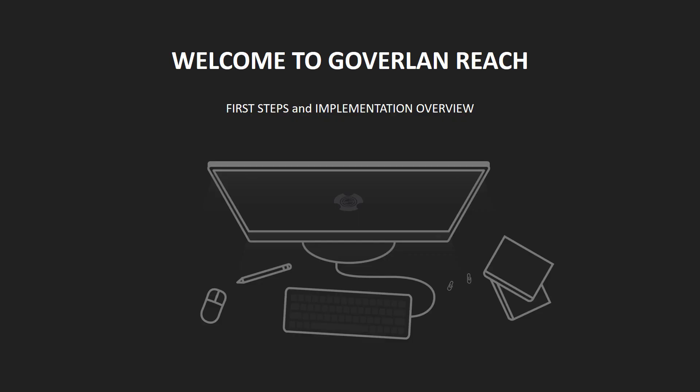Welcome to the Goverland Reach First Steps and Implementation Overview. Goverland Reach is a software solution that gives IT admins the ability to support users, computers, and servers no matter where they are located and without the need for a VPN. It is 100% self-hosted on-premise and does not depend on any cloud-based services. Your data stays with you.